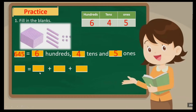Now, in expanded form, how do we expand 645? It is 600 plus 40 plus 5. So 600 plus 40 plus 5. This is the expanded form, and the sentence form is 6 hundreds, 4 tens, and 5 ones.